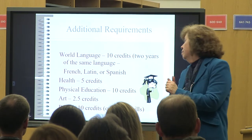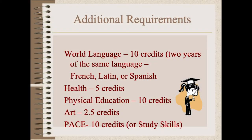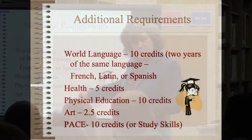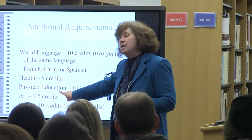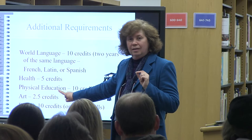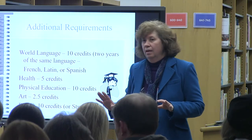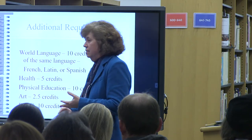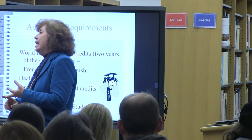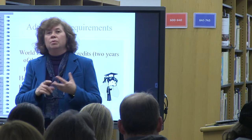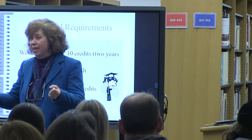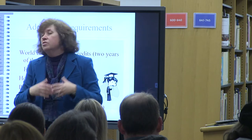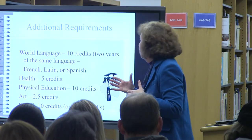We require Health — two and a half credits for two years, typically taken freshman and sophomore year. Physical Education is required all four years at two and a half credits. We require at least one art elective, and that is very broadly defined: it can be a traditional art class, a music class, a theater class, a woodworking class, or certain computer classes like photography and digital design. There are a myriad of ways of fulfilling that art requirement.